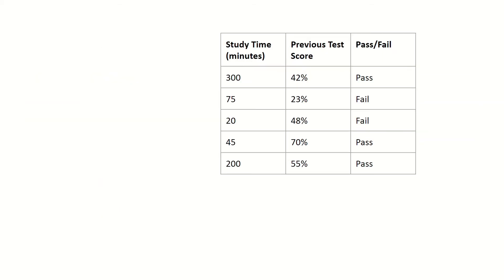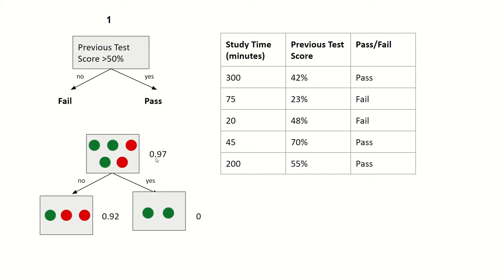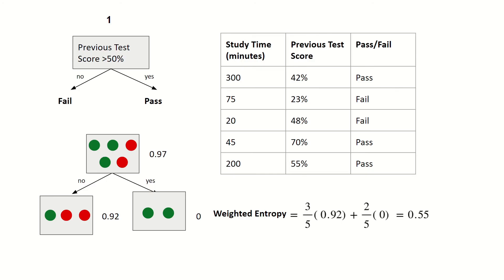So let's now calculate the entropy after the split. We know that the entropy before the split is 0.97. After we apply this decision tree to the data, we have two people with a previous test score larger than 50% placed in one leaf node, and the remaining students in the other leaf node. For the first leaf node we have an entropy of 0.92, and for the second leaf node all data points belong to the same class, giving an entropy of zero. To calculate the entropy after the split, we use weighted entropy: we take the number of data points in each leaf node, divide by the total number of data points, multiply by the entropy of that leaf node, and sum across all leaf nodes. So we have 3/5 × 0.92 + 2/5 × 0, which gives a weighted entropy of 0.55. So this split results in a large decrease in entropy.